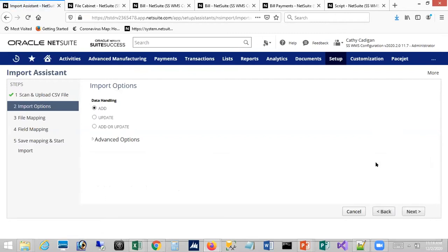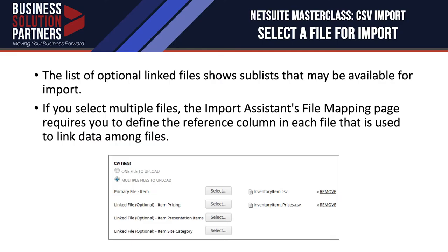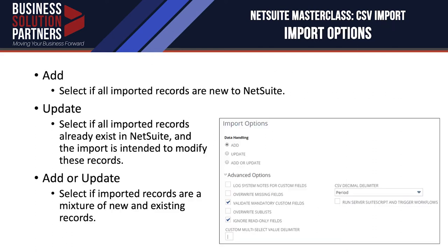In the import options, you have Add, Update, or Add or Update. The Add option is for inserting new records only. Update is for updating existing records in NetSuite. If you're unsure whether your CSV rows already exist in NetSuite, pick Add or Update — it will handle both cases for you.